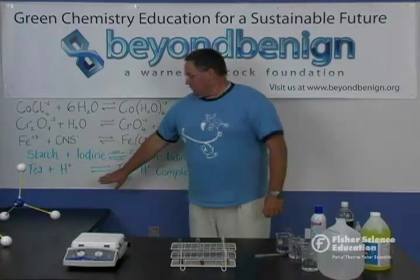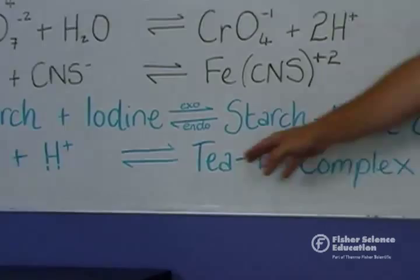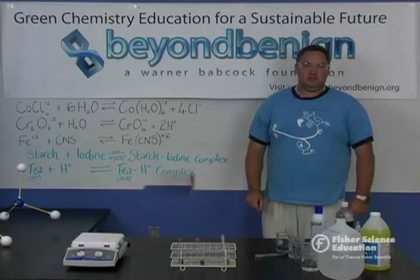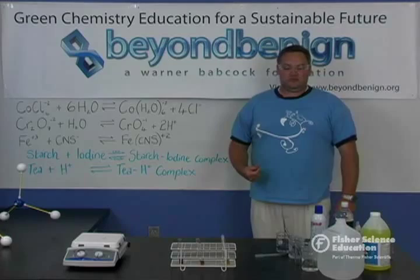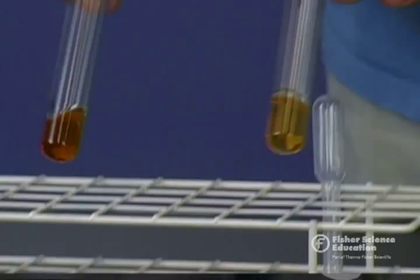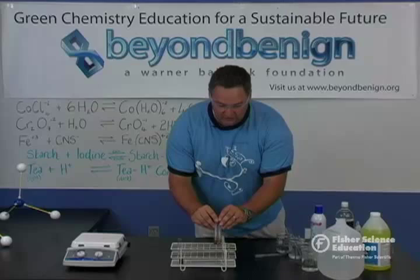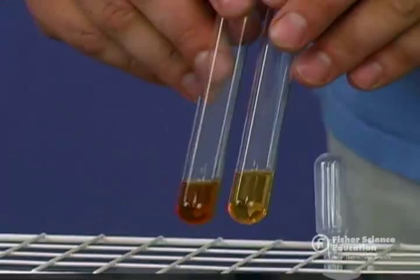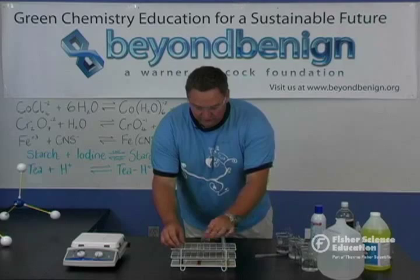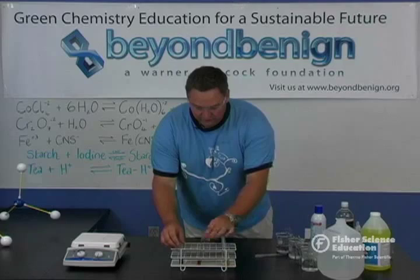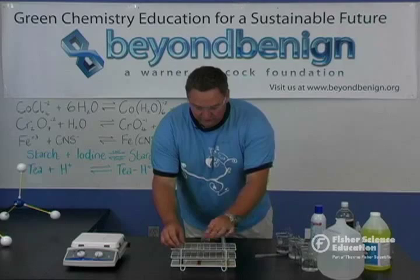The addition or removal of hydrogen ions will cause our equilibrium to shift in either the forward or reverse direction to remove the stress placed on it. Comparing our acidified sample to our control, we see that the tea has gotten significantly lighter, indicating a shift towards the forward reaction. Comparing the solution where we removed hydrogen ions, we see that it is in fact significantly darker.